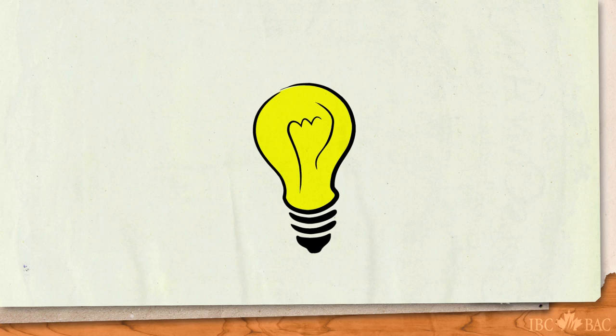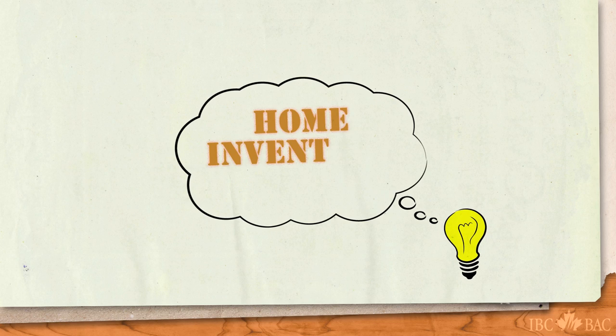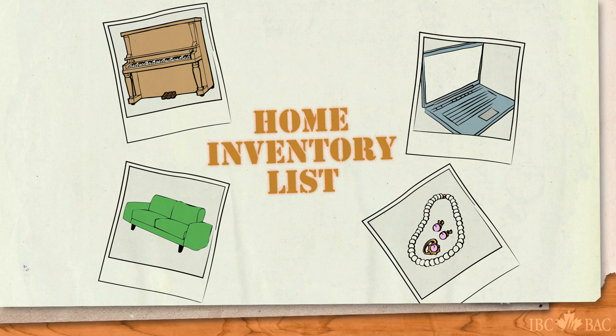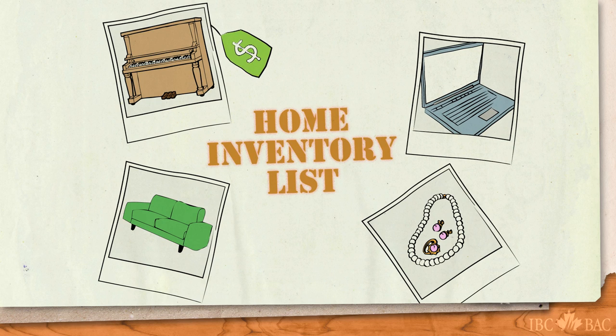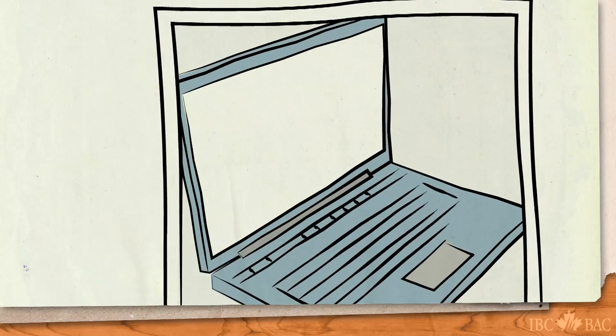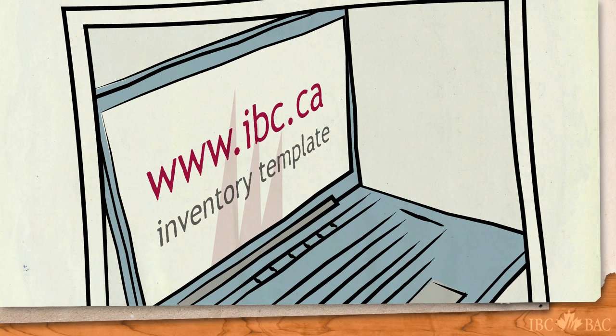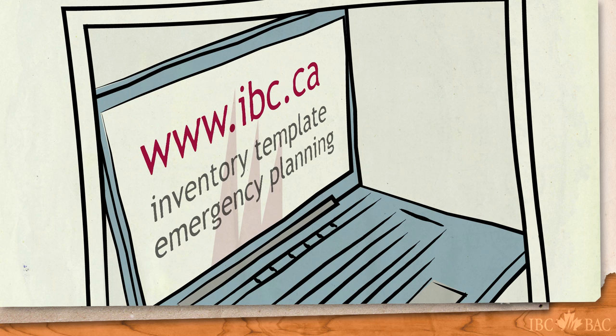It is also a smart idea to make a home inventory list, and maybe photos too, of all that you hold near and dear. A good home inventory will also include the replacement costs of all your valuable possessions. Visit us at ibc.ca. Insurance Bureau of Canada has an easy-to-use template to help you create your home inventory, as well as more details on emergency planning.